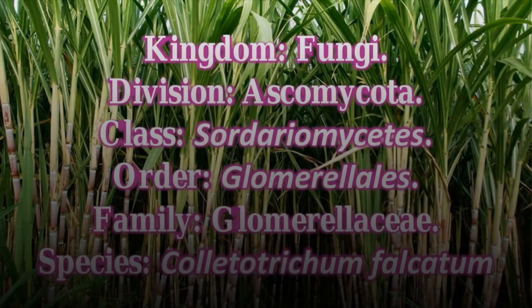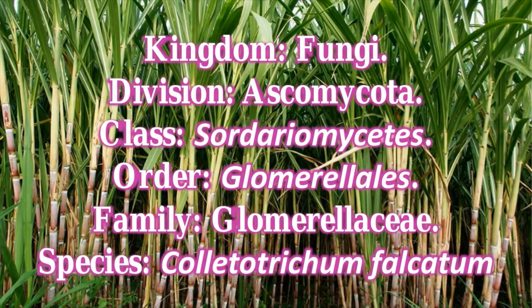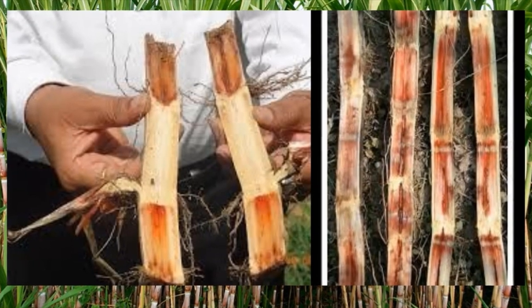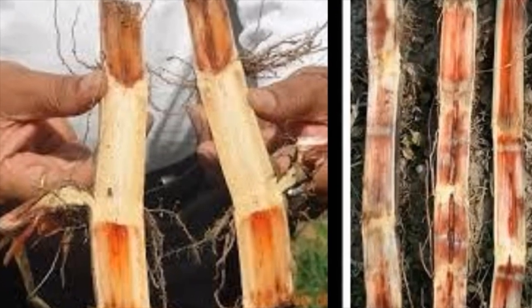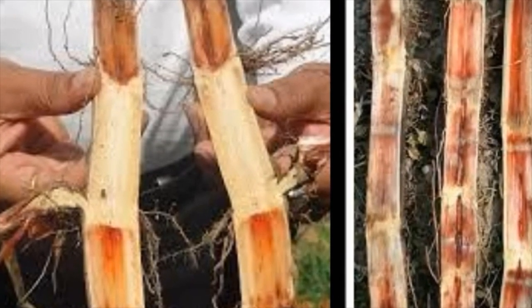Red rot of sugarcane is caused by the fungus Colletotrichum falcatum. It comes under Kingdom Fungi, Division Ascomycota, Class Sordaryomycetes, Order Glomeralens, Family Glomeraleaceae, and the species is Colletotrichum falcatum. You are seeing the infected canes where the internal portion of the sugarcane is looking red in color.